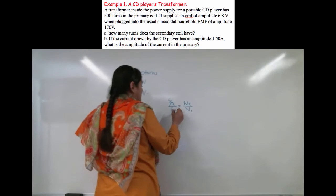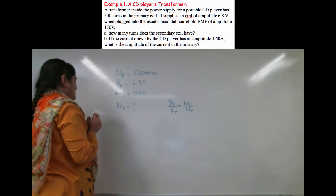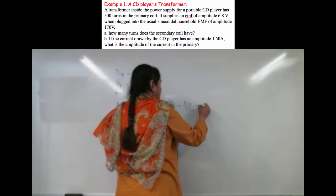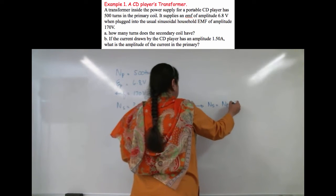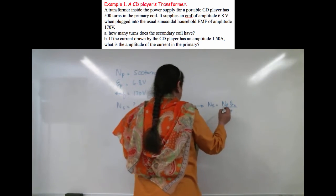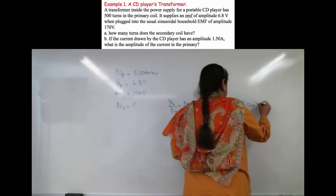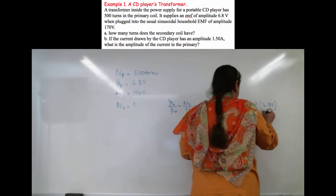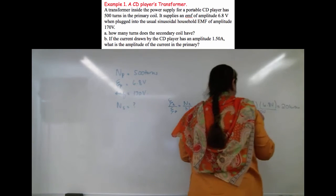If I convert this to P and S, it will make things easier. So all I have to do is plug in the numbers. I get N in the secondary equals NP times E2 divided by EP. Plug numbers in: 500 times 6.8 volts divided by 170 volts, and you get 20 turns.